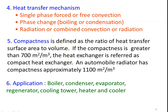Another method of classifying heat exchangers is compactness, defined as the ratio of heat transfer surface area to volume. When this ratio is greater than 700 m² per m³, the heat exchanger is referred to as a compact heat exchanger. The automobile radiator is an example of a compact heat exchanger, with a compactness of approximately 1100 m² per m³, meaning the total heat transfer area is very high compared to the overall volume of the radiator.